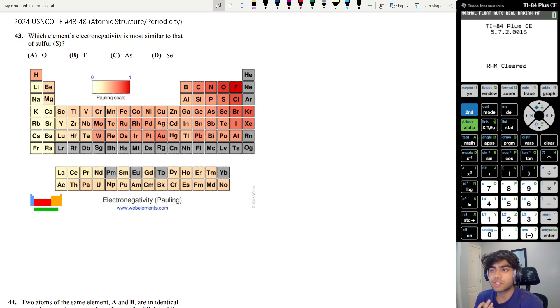Hey what's up everyone, so we're going to be doing the atomic structure and periodicity section of the 2024 US NCO local exam. This is from questions 43 to 48. Let's start with question 43.